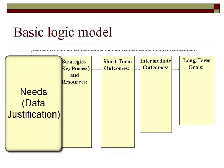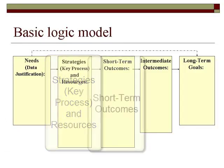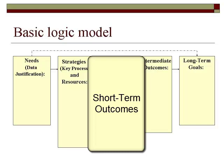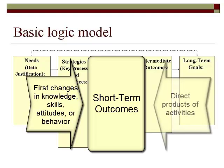First, note the need based on your review of the new or existing data. Next, fill in the approach that you have identified or developed to address the need and the resources needed to implement your strategy. Short-term outcomes represent first changes expected in knowledge, skills, attitudes, or behavior — i.e., direct outputs of your work, usually expressed in numbers. Be sure short-term outcomes include changes in knowledge, skills, and behaviors of those who are implementing the strategy.